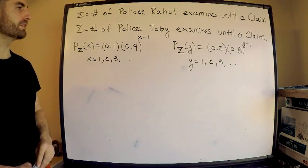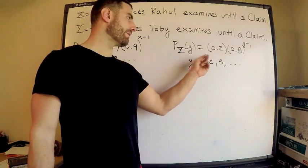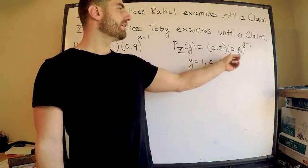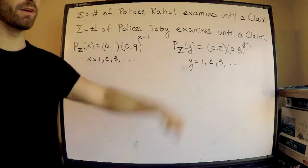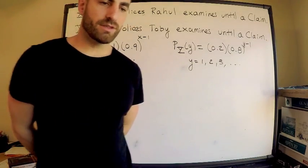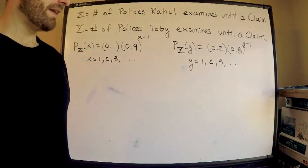There's a probability mass function describing Y. Probability of success is 0.2, therefore the probability of failure is 0.8. These are the values of random variables from 1 through infinity.